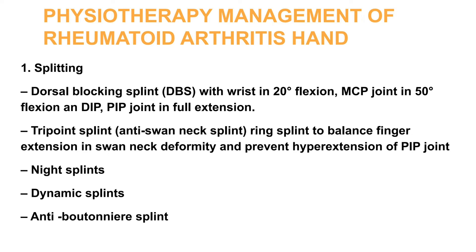Physiotherapy management of rheumatoid arthritis includes hand splinting. A dorsal blocking splint is used with the wrist in 20 degrees flexion, MCP joint in 50 degrees flexion, and DIP and PIP joints in full extension. A three-point splint and ring splint are used to balance finger extension in swan neck deformity and prevent hyperextension of the PIP joint. Night splint and dynamic splint are also used.